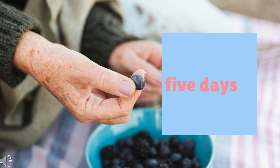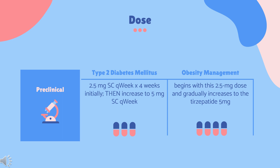Half-life: The half-life of tirzepatide is approximately 5 days. Dosing for type 2 diabetes mellitus: Tirzepatide is indicated as an adjunct to diet and exercise to improve glycemic control. The initial dose is 2.5 mg subcutaneously once weekly for 4 weeks, then increased to 5 mg once weekly. If additional glycemic control is needed, increase by 2.5 mg increments after at least 4 weeks at the current dose. Maximum dose: 15 mg subcutaneously once weekly. Note: the initial 2.5 mg dose is intended for treatment initiation and is not effective for glycemic control.